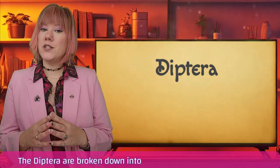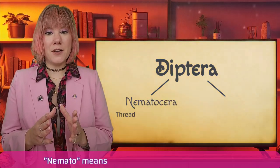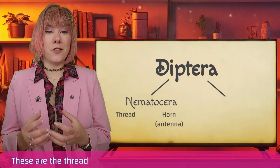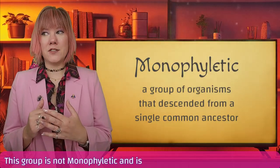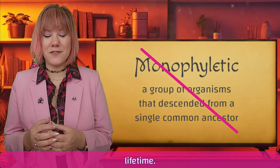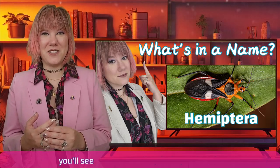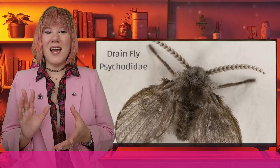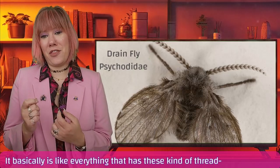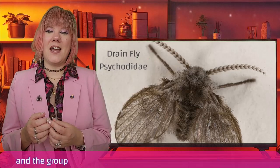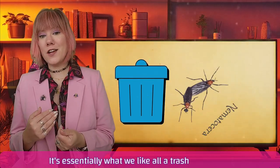The Diptera are broken down into two different suborders. The first suborder is Nematocera. 'Nemato' means thread, and 'cera' means horn — these are the thread-horned or thread-antennae insects. This group is not monophyletic and is likely to change probably within our lifetime. Almost all of insect taxonomy is up in the air. Anyway, Nematocera basically is everything that has these thread-like antennae, and the group isn't evolutionarily derived from a common ancestor — it's essentially what we like to call a trashcan family.